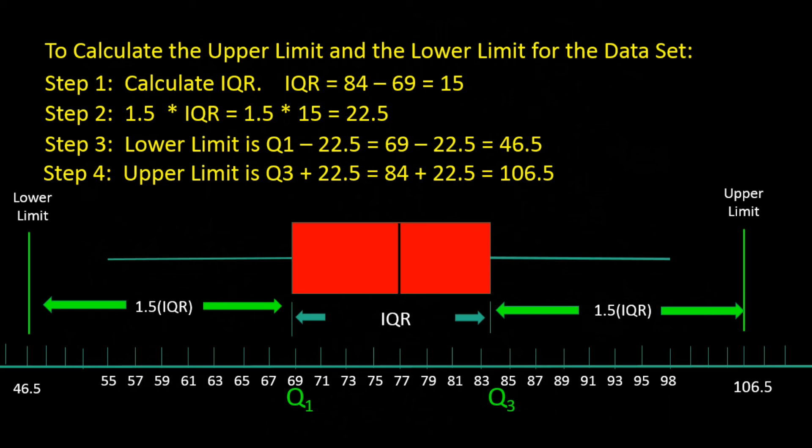The lines on the right and left side of the box plot indicate the upper and lower limits of the data set, just for illustration purposes. But those lines are not normally shown on a box plot. Just the box and the whiskers are typically shown.